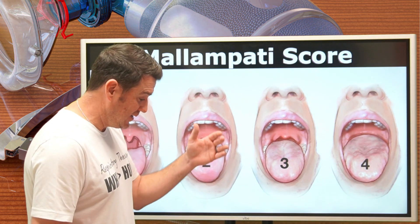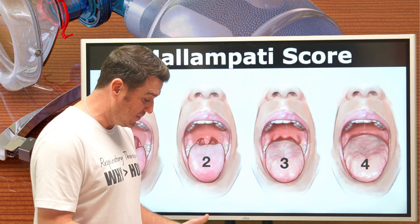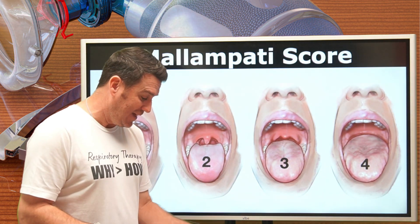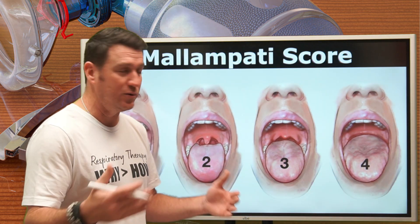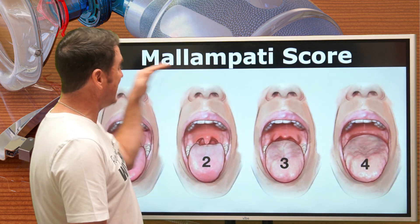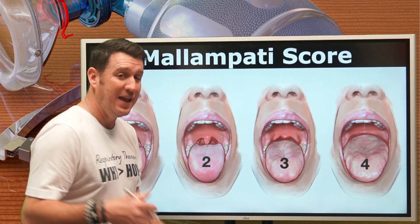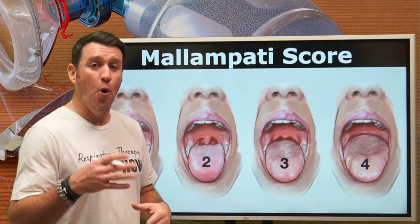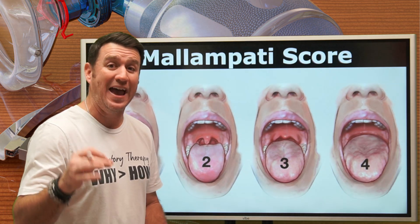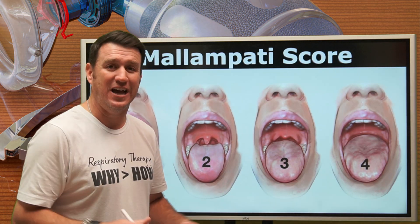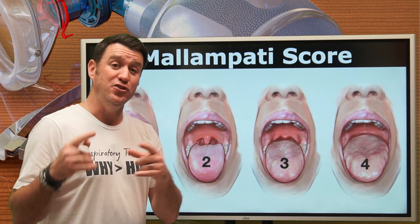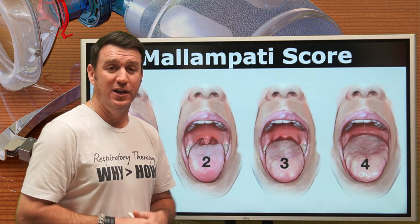Egan's chapter 22 talks about the Mallampati classification as one of the most used methods to identify individuals with potential difficult airways. The way we do this is we have our patients sitting up, open their mouth as wide as they can, and protrude their tongue as far as they can without speaking. So this does not include any phonation — just open your mouth and stick out your tongue, and you look inside your patient's mouth.